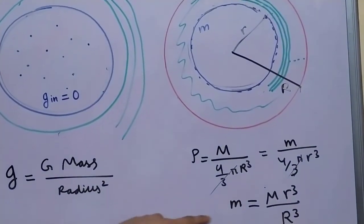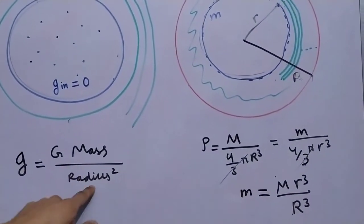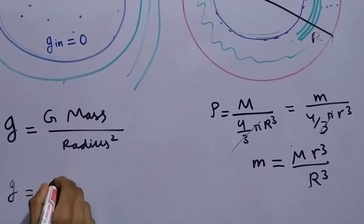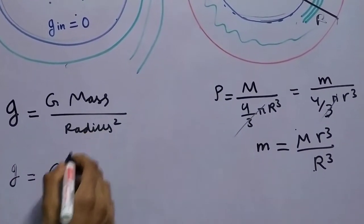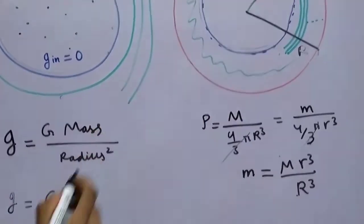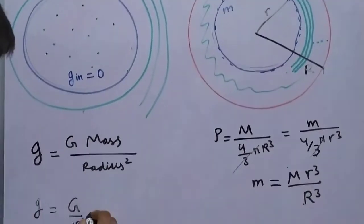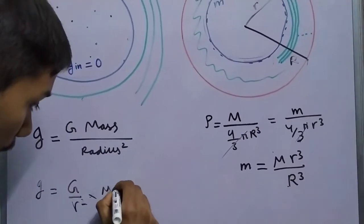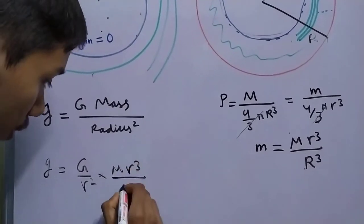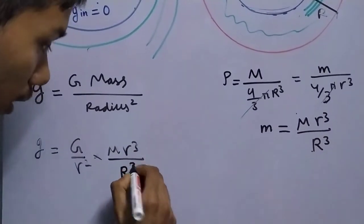We just put m and r into our equation here. We're left with g equal to G divided by radius square. Radius in this case will be small r into mass. Mass is capital m r cube upon capital r cube. Now of course this has to be minus if you are considering the entire vector, but we are considering the magnitude in this equation.